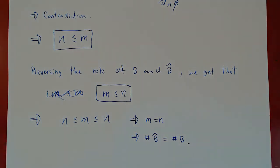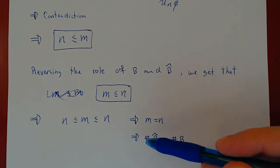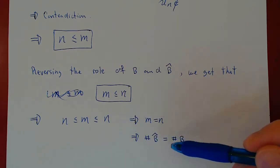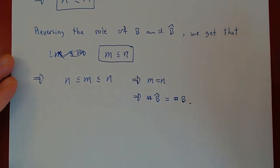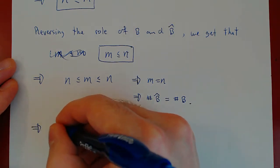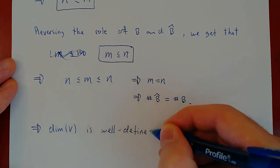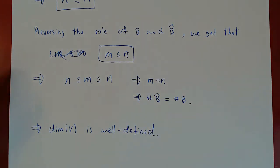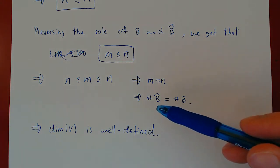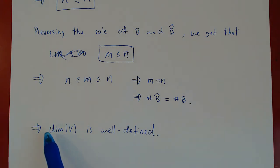This completes the proof. We have taken two arbitrary bases of vector space V — B and B-hat — and proved that the number of elements in B-hat must be the same as the number of elements in B. Therefore the dimension of the vector space, defined as the size of any basis, is well defined. It is impossible that for a given vector space you find a basis with three vectors and I find a basis with five — no matter how you find your basis, it will always have the same number of elements.